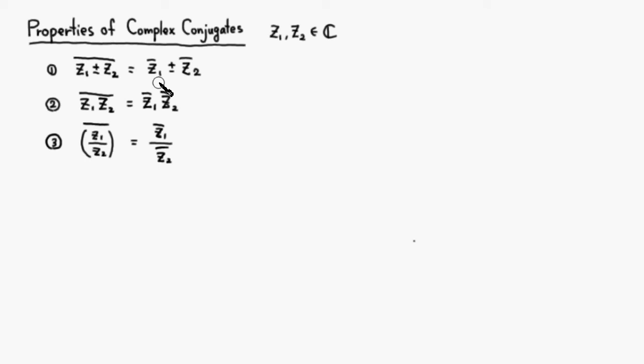It works the same way with multiplication: the conjugate of a product is the product of conjugates. Division works the same way — the conjugate of z1 over z2 is z1-bar over z2-bar. The proof of property three is a homework, so let's prove properties one and two.